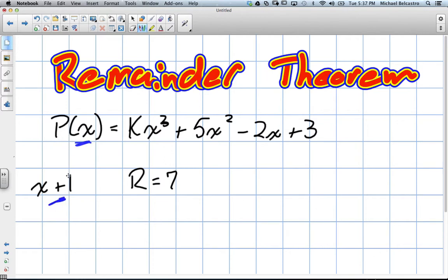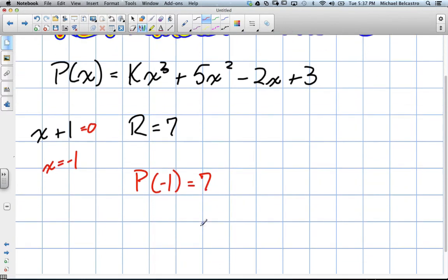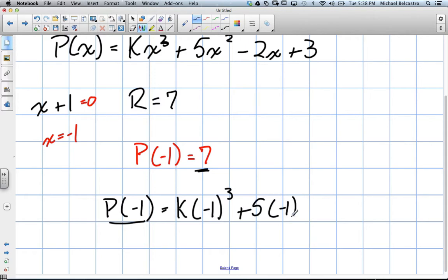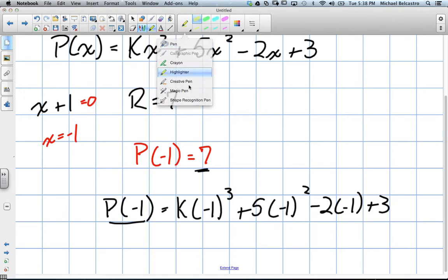Now, our p at x, we know the factor we're using here. To find the factor, we would essentially set this equal to 0. The factor in this case is x equals negative 1. So with our remainder theorem, p at negative 1 is essentially equal to the value of 7. We're going to plug negative 1 into all these values.